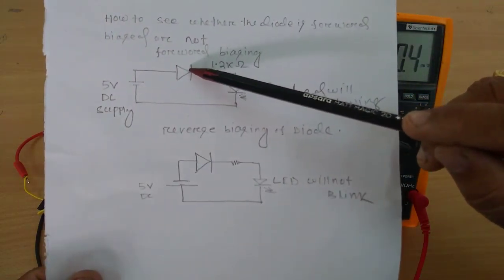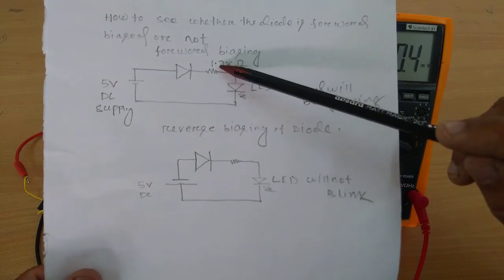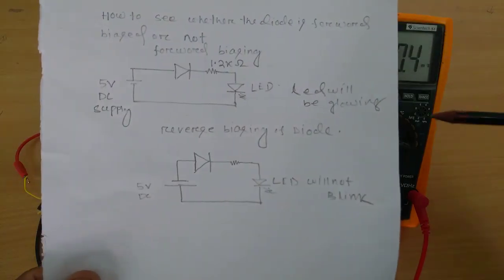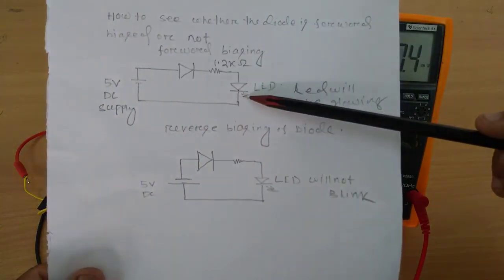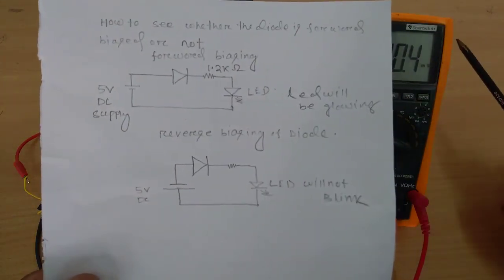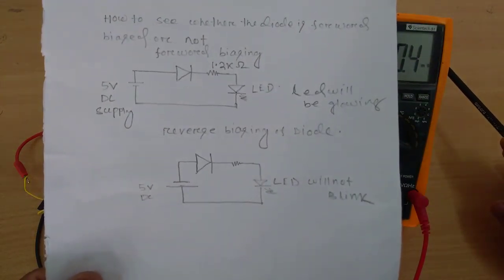A PN junction diode is being taken. A 1.2 kilo ohm resistor is also been taken. The LED is connected in series with the 1.2 kilo ohm resistor in series with the diode.